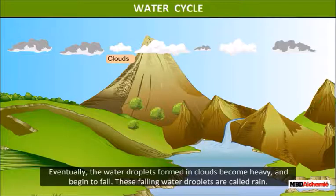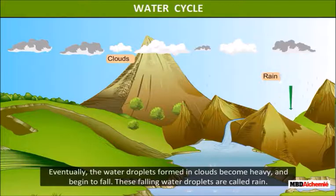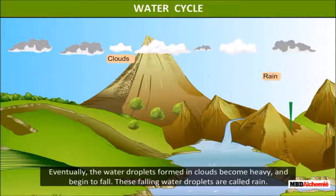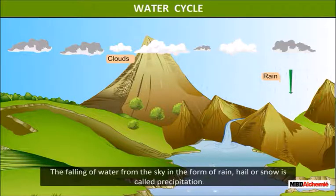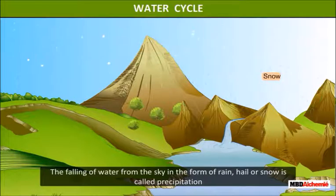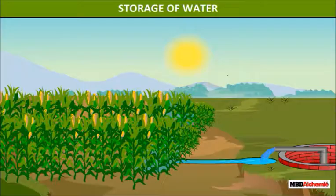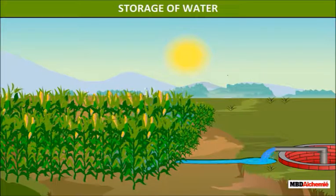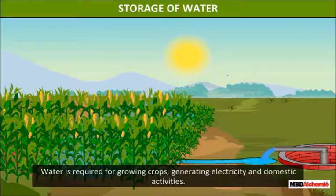Eventually the water droplets formed in clouds become heavy and begin to fall. These falling water droplets are called rain. The falling of water from the sky in the form of rain, hail, or snow is called precipitation.